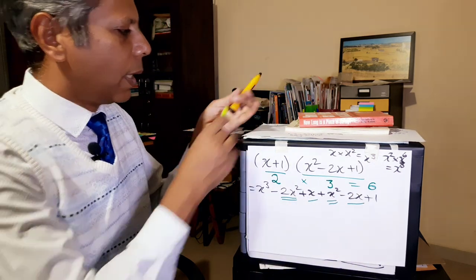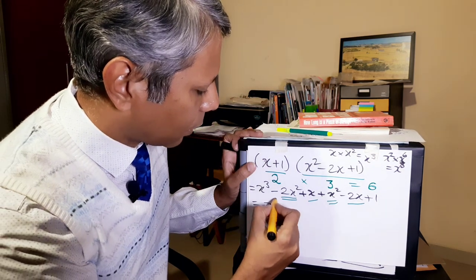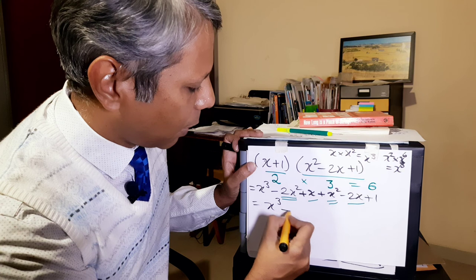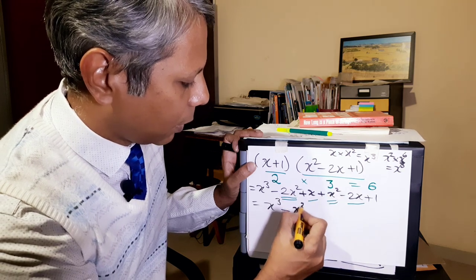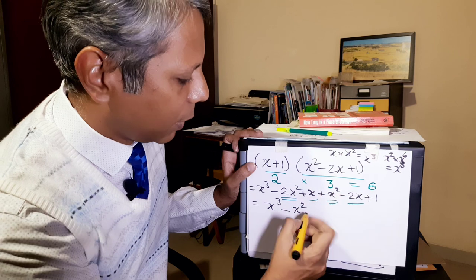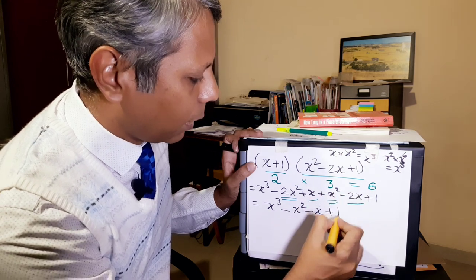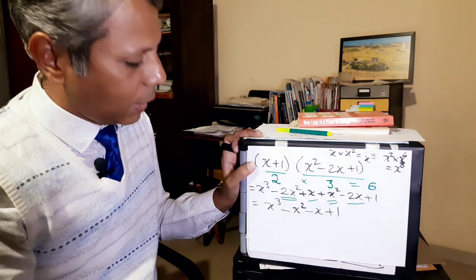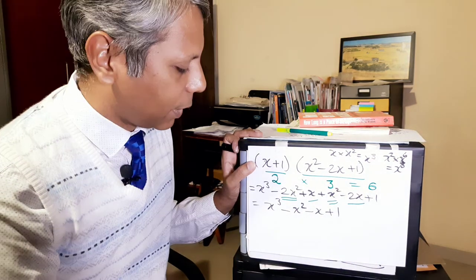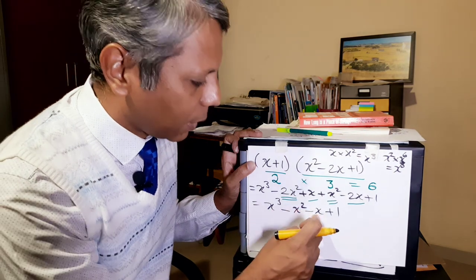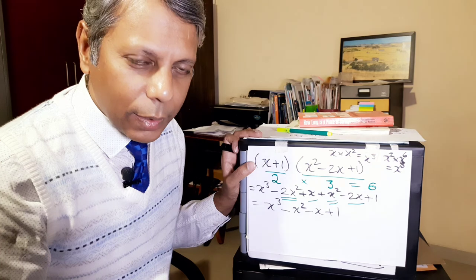So if you combine them, we get x cubed minus 2x squared plus x squared is just x squared, plus x minus 2x is minus x, and plus 1. So we have a nice, beautiful expression like x cubed minus x squared minus x plus 1.